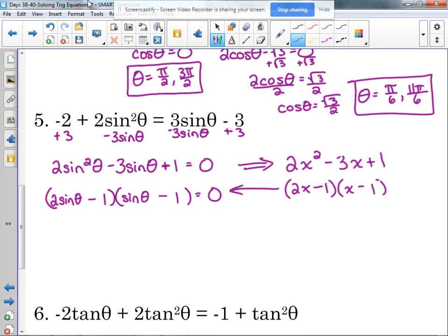Any questions about my factoring there? Set the two factors equal to zero. Solve them individually. Two sine of theta minus one is equal to zero. Sine of theta minus one is equal to zero. I'm going to solve the easier one first.